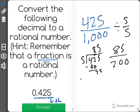Now looking at this, I can still simplify it. I can divide both of these again by 5, and that will give me 17 over 40.